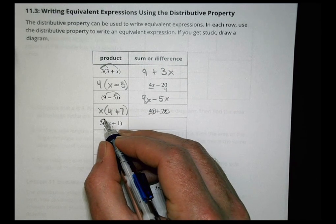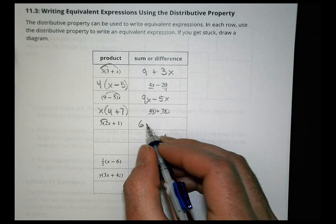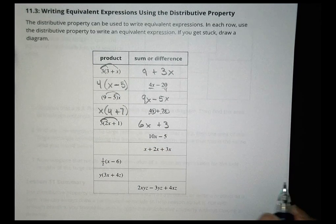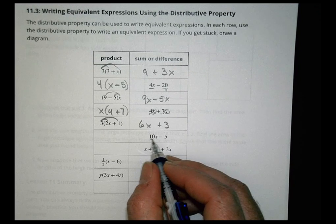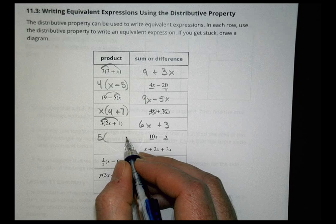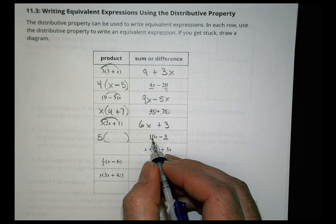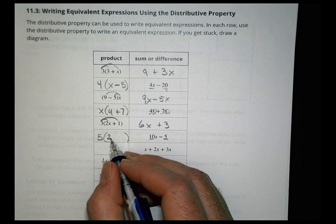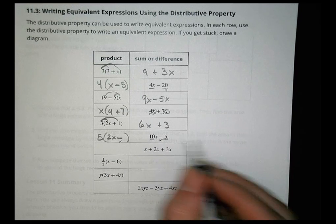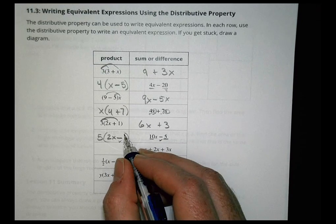This side, let's multiply. 3 times 2 is 6x and 3 times 1 is 3. What do these have in common? A 5 is in common with both of them. How many 5s are in 10? There are two 5s in 10x. Keep the minus sign. How many 5s are in 5? 1. So 5(2x - 1).